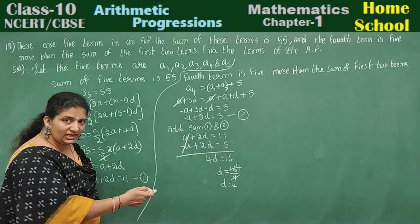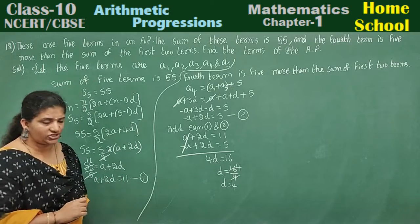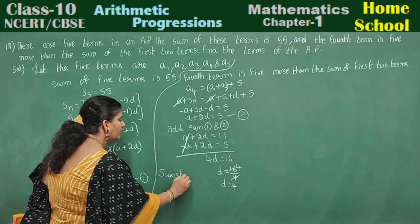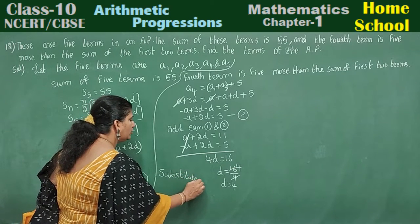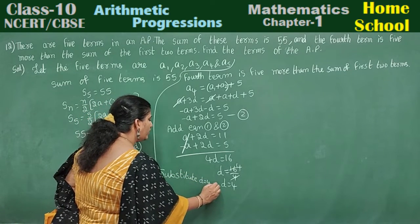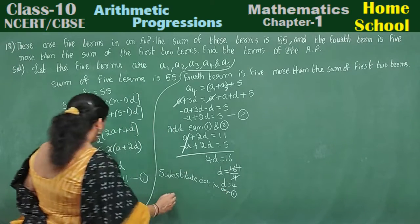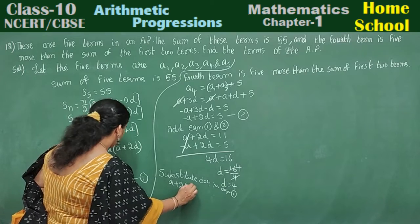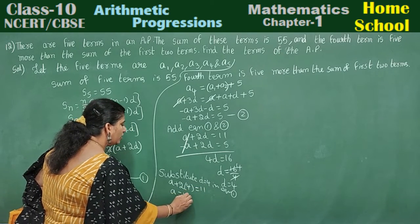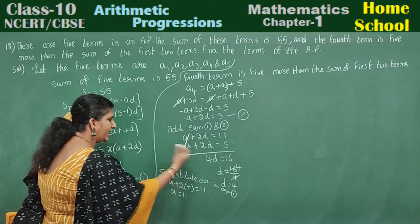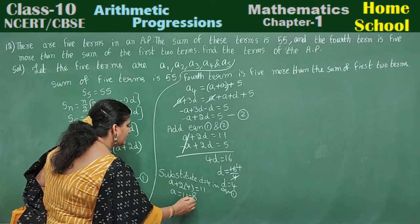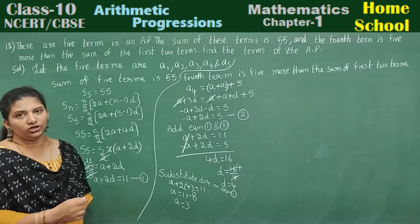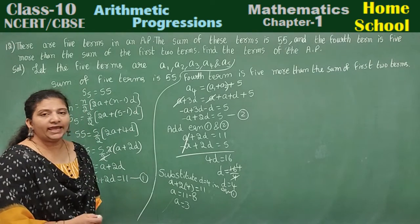Next, substitute D equals 4 in equation one to find A. A plus 2 into 4 equals 11. A plus 8 equals 11. Bring 8 to the other side: A equals 11 minus 8, which is 3. Therefore A equals 3. We have found both A and D.